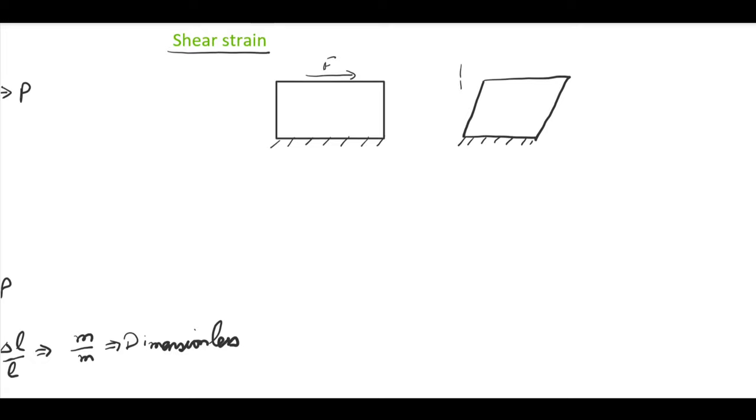This deformation is in the case of shear stress. The upper surface slides relative to the lower surface and the corner angles are altered by the angle phi. So this phi is the shear strain.